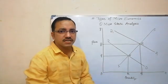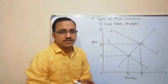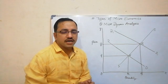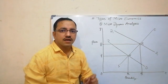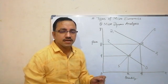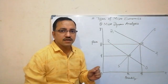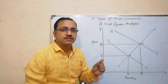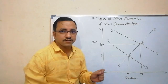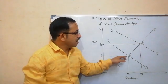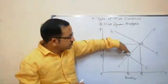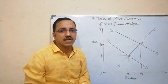Now we will study the third type of microeconomics: micro dynamics. Micro dynamics focuses on how the old equilibrium position is changed into the new equilibrium position. It throws light upon the whole process by which the old equilibrium E is converted or transformed into the new equilibrium position E1, including how this conversion happens step by step.